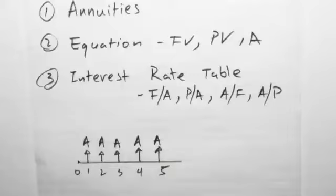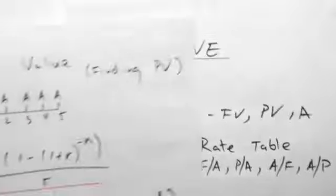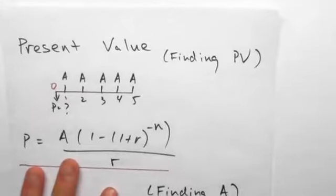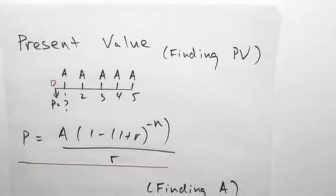So the first thing we'll look at is present value. How do we work out the present value of some series of cash flow? You can always look at each period and discount it back to time 0 and work out the present value that way.